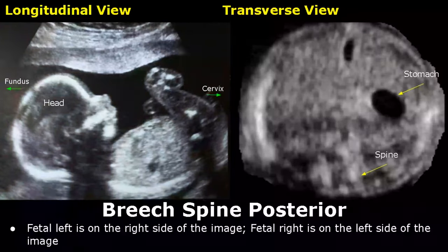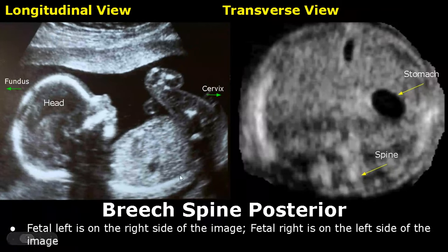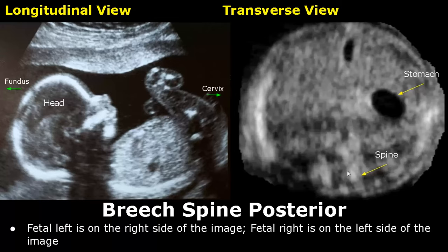Breech spine posterior is an orientation of breech presentation. The spine is located on the lower side of the image in both longitudinal and transverse views. In a transverse view, the stomach is seen on the right side of the image, so fetal left is on the right side of the image.